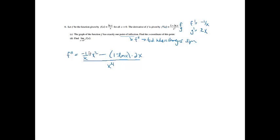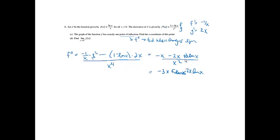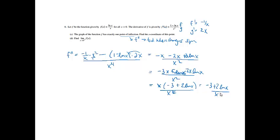Simplifying: negative 1 over x times x squared — the x's cancel giving negative x. Distributing the minus and 2x gives minus 2x plus 2x ln(x), all over x to the 4th. Factoring out x from the numerator gives x times (negative 3 plus 2 ln(x)) over x to the 4th, which reduces to negative 3 plus 2 ln(x) all over x cubed as the second derivative.